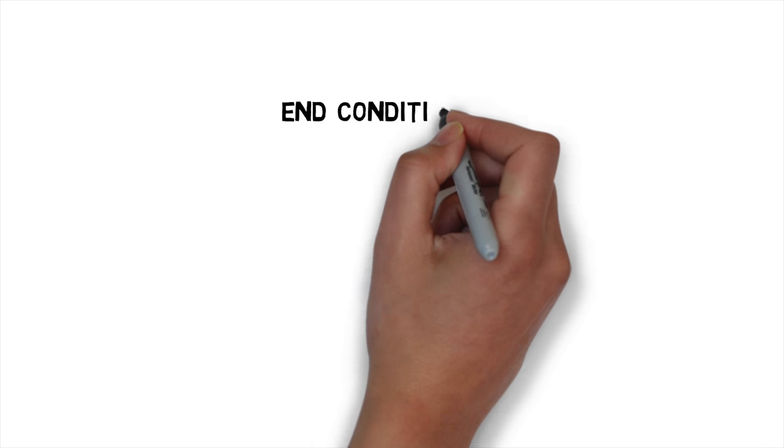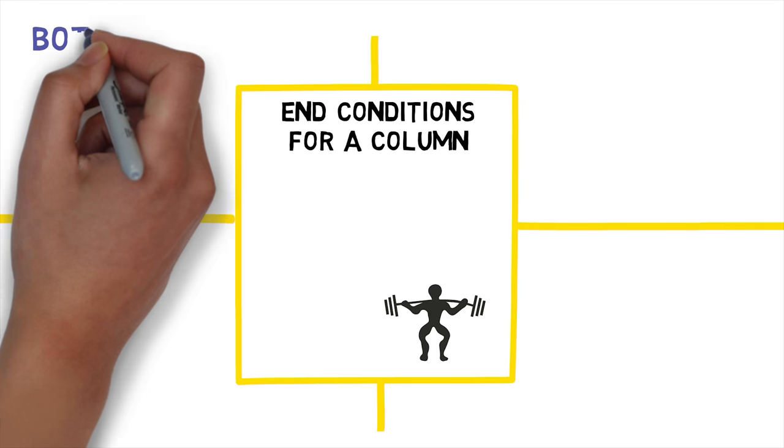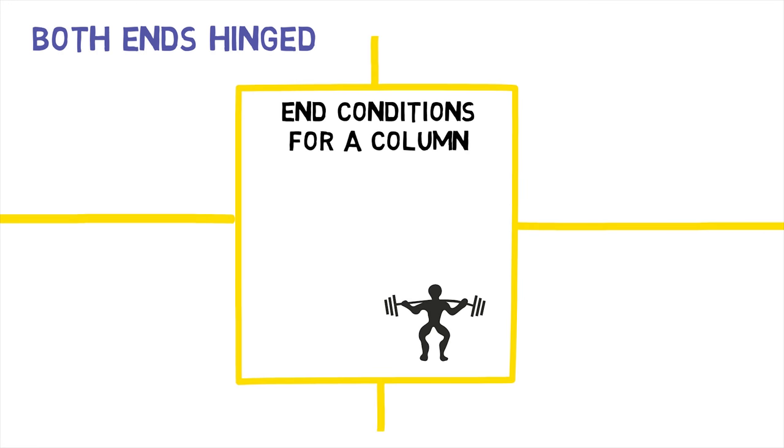Types of end conditions for a column are the major factors which influence the load-bearing capacity of a column. They are of four types. First, column with both ends hinged. This is the standard column end condition.